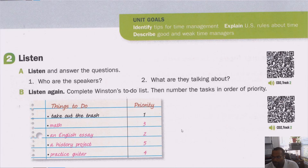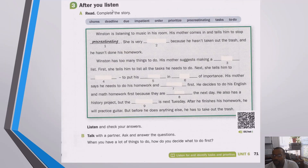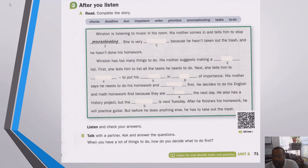Alright, let's move on. Number three: after you listen, read, complete the story. Let's look at the words inside this gray oval. The first one is 'chores.' We talked about chores before — those are things we usually have to do around the house: wash dishes, clean our room, clean the bathroom, take out the trash, things like that. Next: 'deadline.' When we're talking about time management, these are the things we have to get done before a certain time.